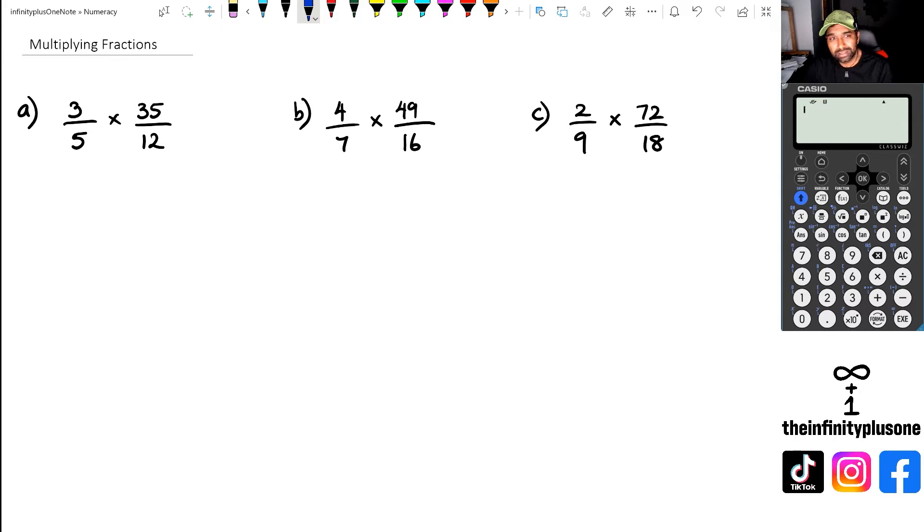Now, in this particular case, trying to do this without a calculator, 35 times 3 is a bit of work, and especially if you look at question B there, you've got 49, 4. So there is a couple of shortcuts with these types of questions, and it's actually looking at the numbers itself.